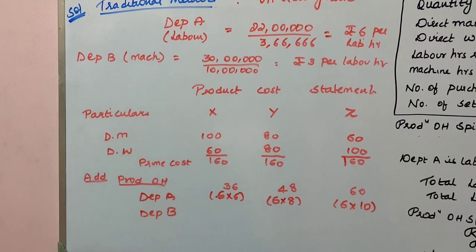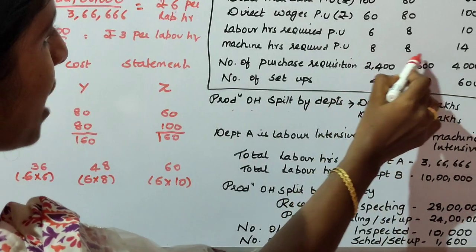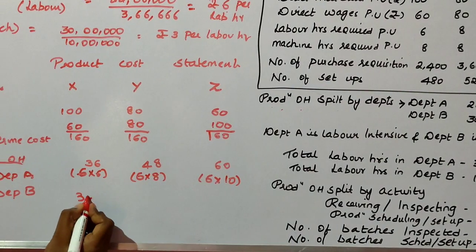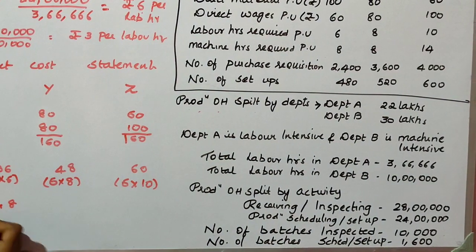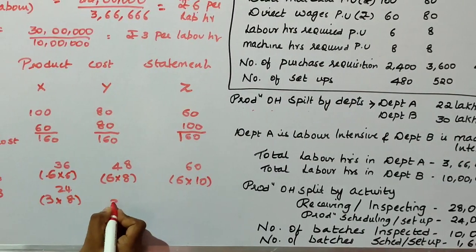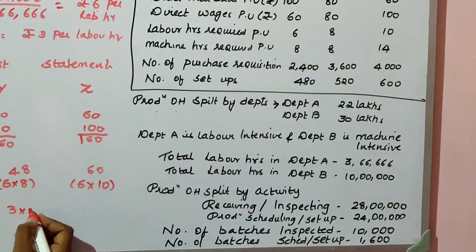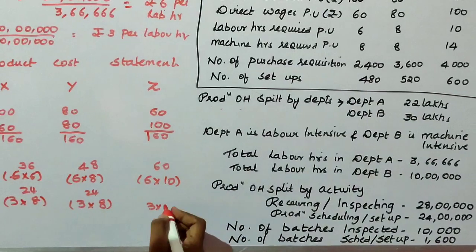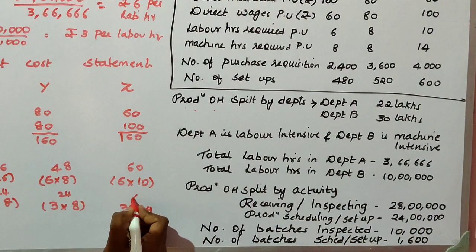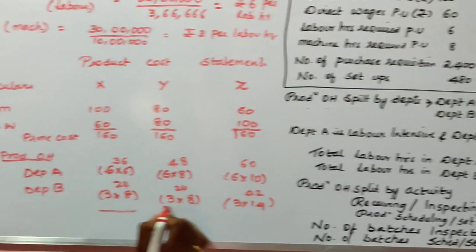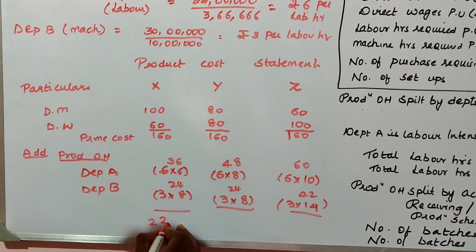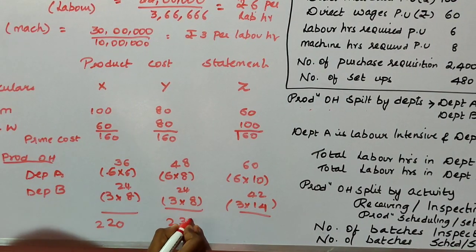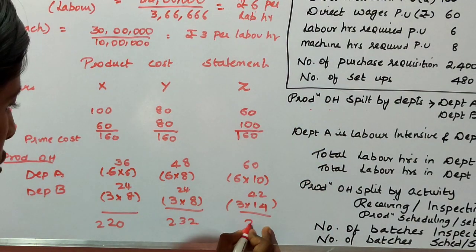Department B is machine intensive, so we take the machine hours and apply the overhead recovery rate of ₹3. For product X: 3 into 8 machine hours = ₹24. For product Y: 3 into 8 = ₹24. For product Z: 3 into 14 = ₹42.